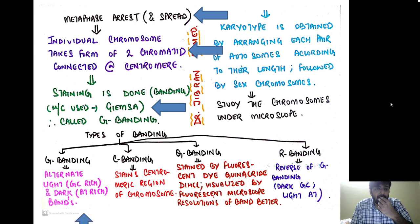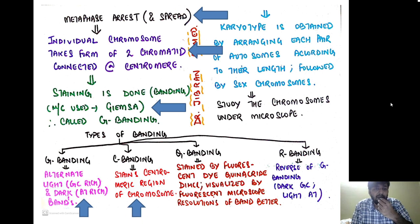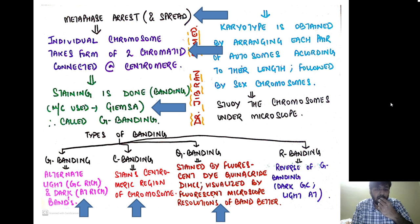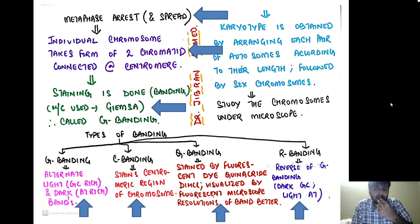There are different types of banding. In G-banding, we have alternate light and dark bands: light bands are GC-rich areas and dark bands are rich in nucleotides A and T. C-banding stains the centromeric region. Q-banding uses fluorescent dye quinacrine dihydrochloride, visualized by fluorescent microscope — its advantage is far better resolution. R-banding stands for reverse banding; it is the reverse of G-banding where darker areas are GC-rich and lighter areas are AT-rich.